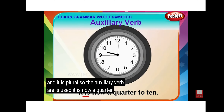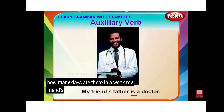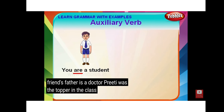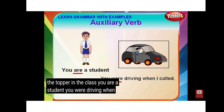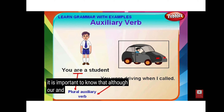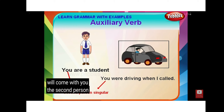It is now a quarter to ten. How many days are there in a week? My friend's father is a doctor. Preeti was the topper in the class. You are a student. You were driving when I called. It is important to know that although 'are' and 'were' are plural auxiliary verbs, they will come with 'you' — the second person singular.